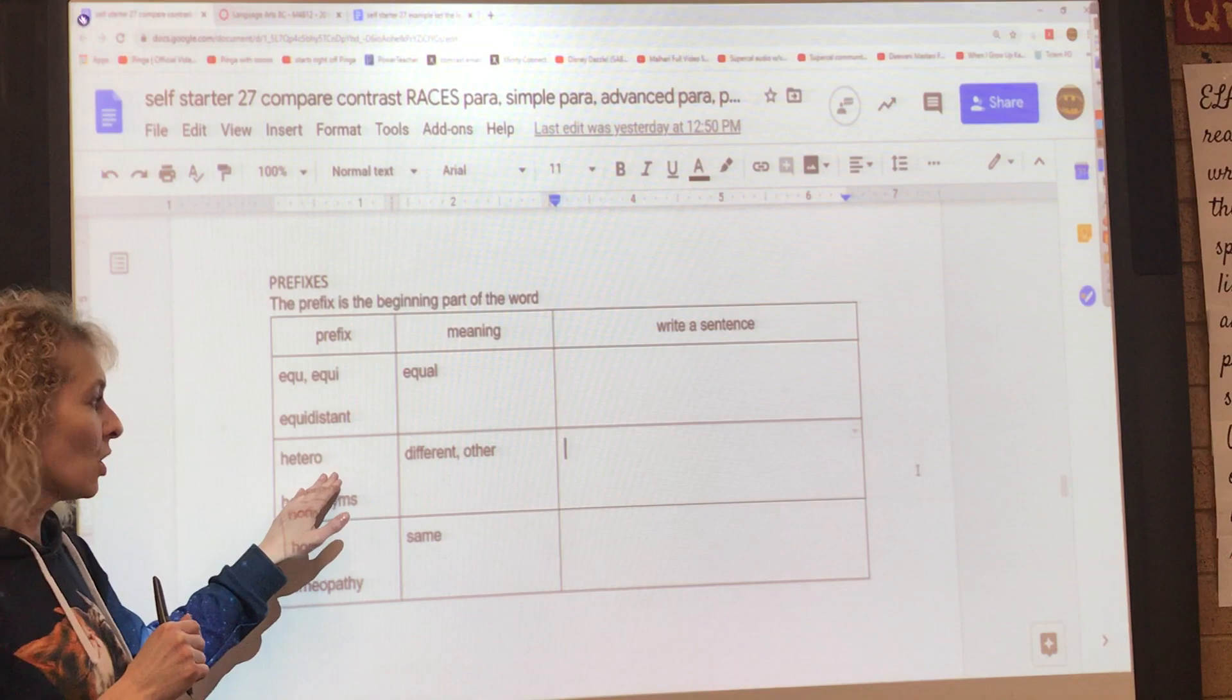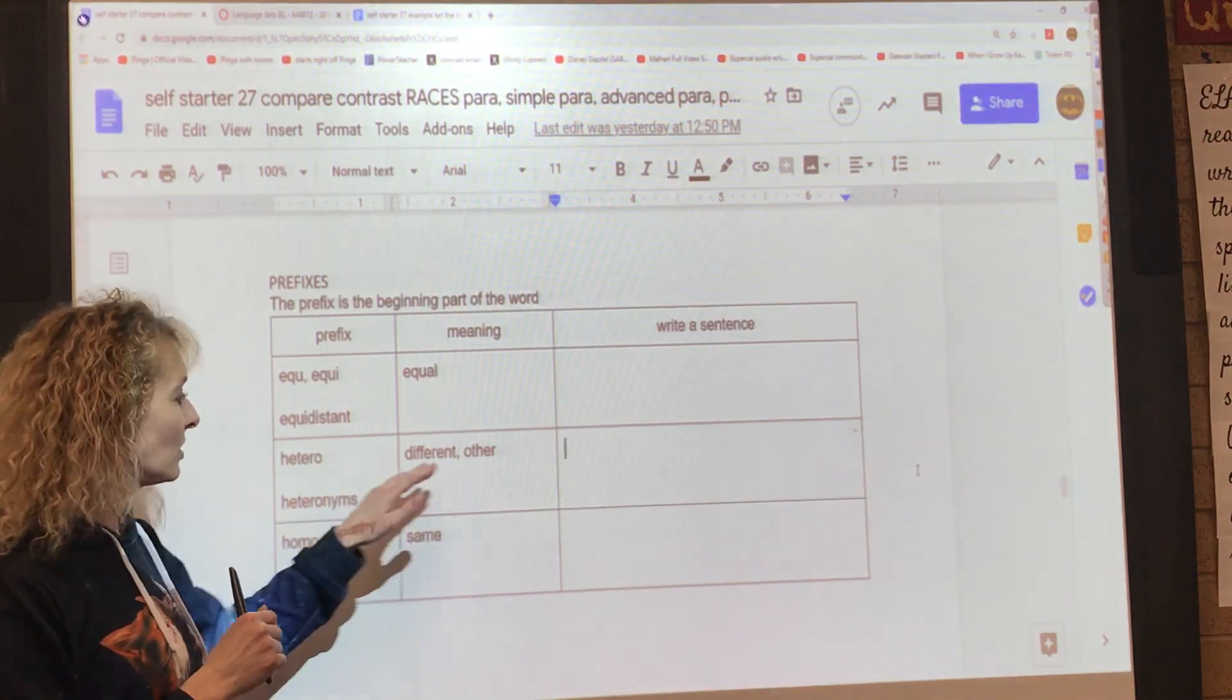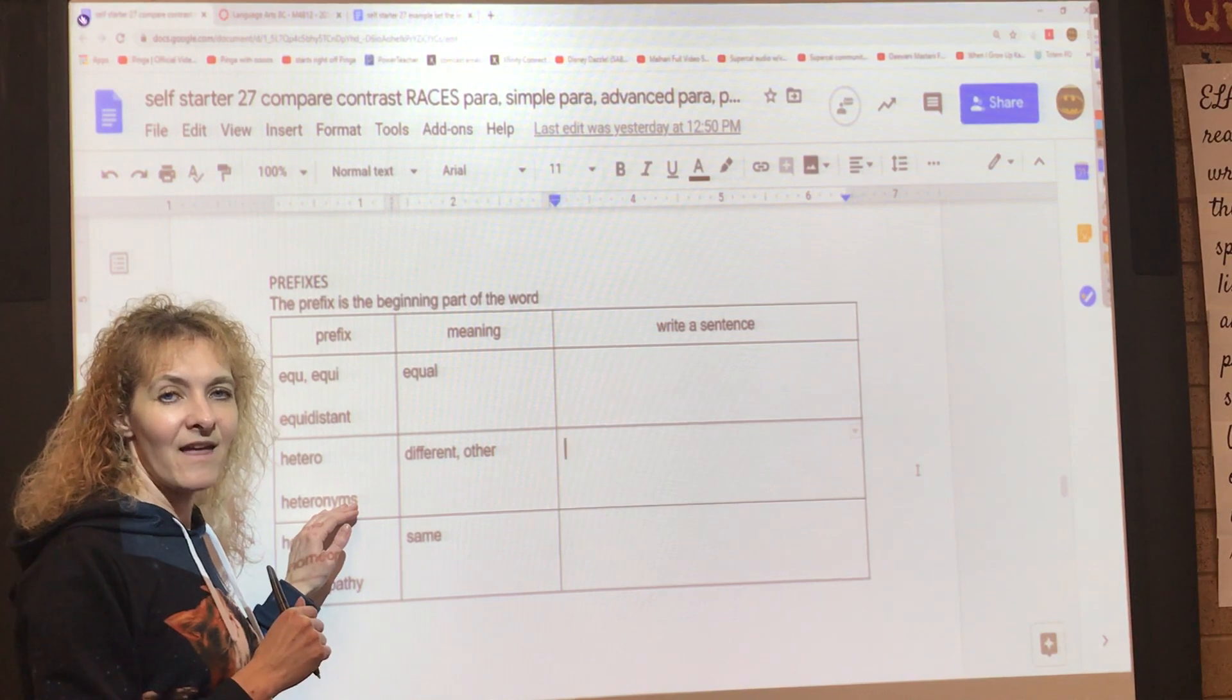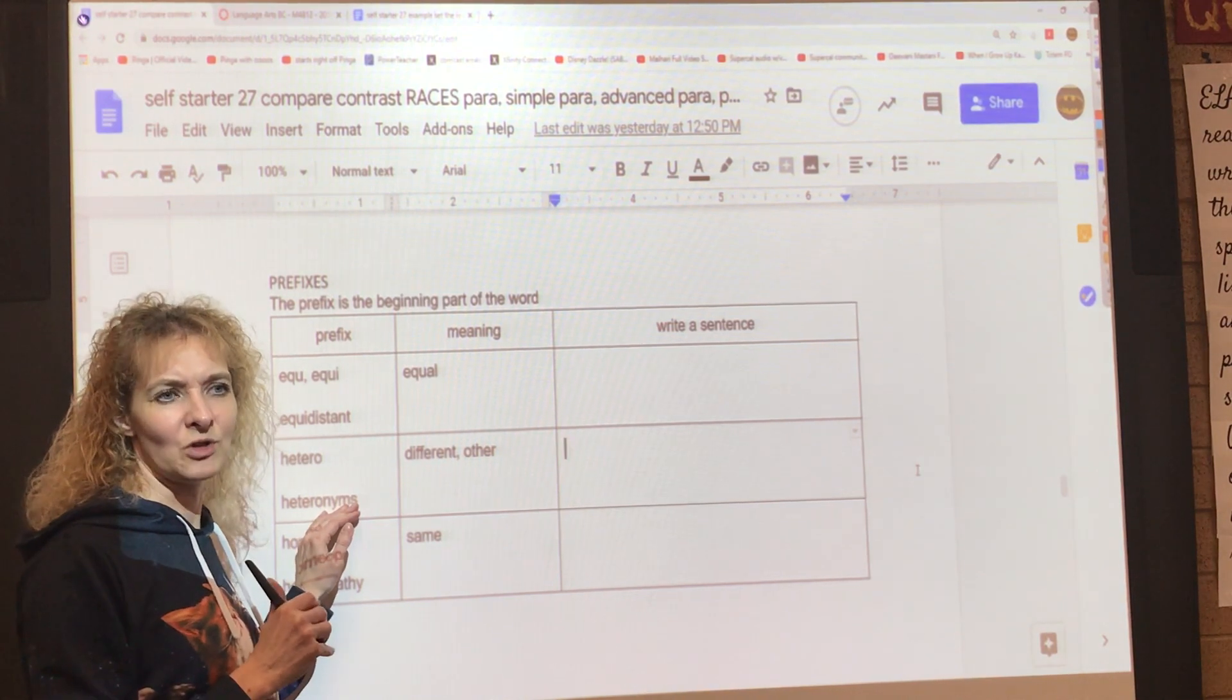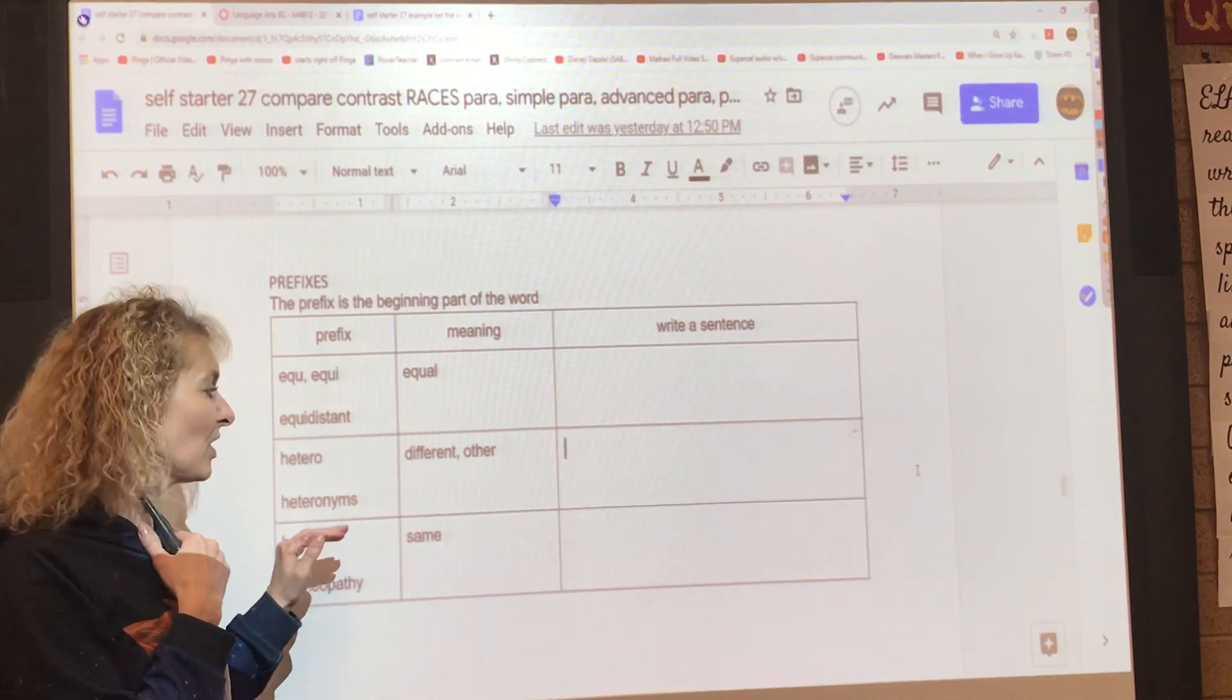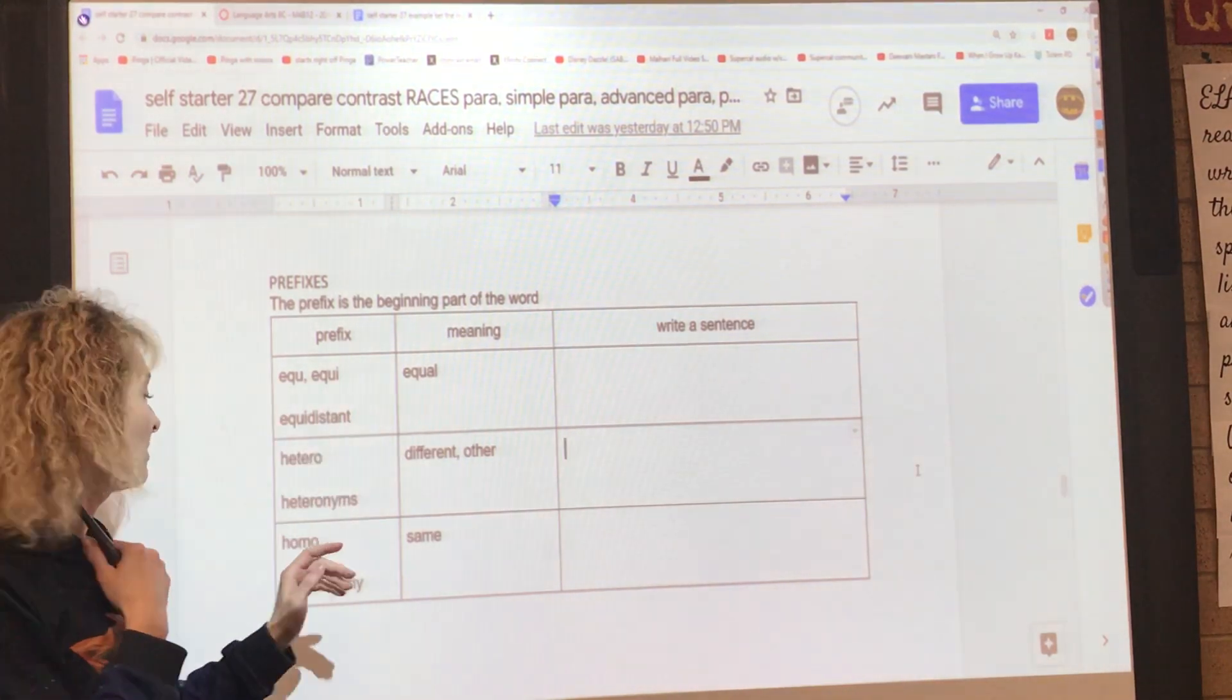Next is hetero, which means different or other. The word you have to put in the sentence is heteronyms. Nyms usually have to do with parts of words and words and stuff like that, so heteronym. Make sense with that?